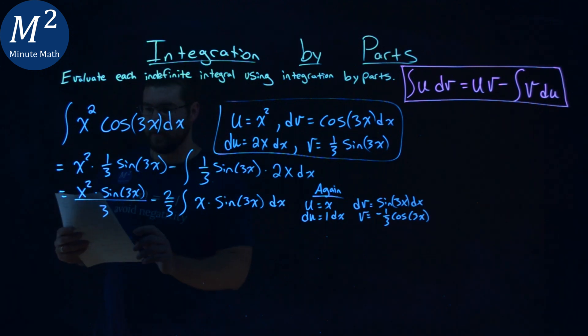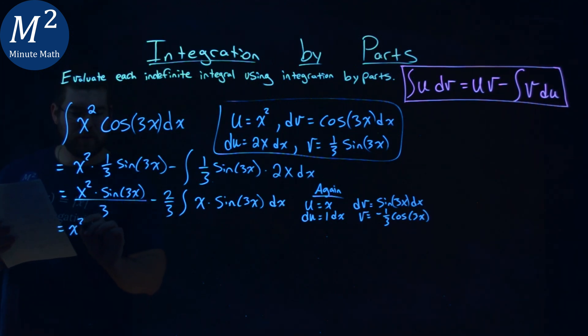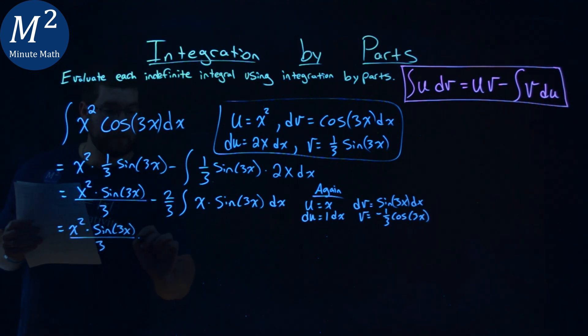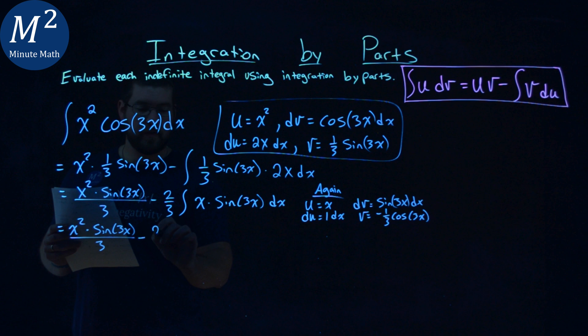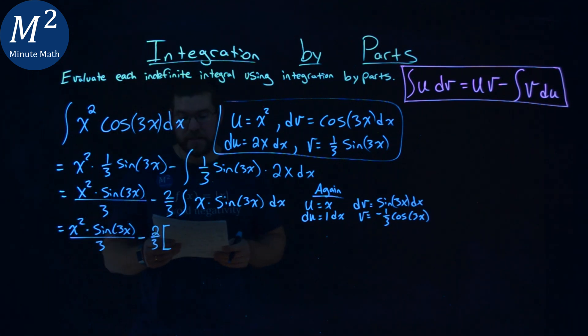Apply that again here. We keep everything over. x squared sine of 3x over 3 minus 2 thirds stays out here, but now we're going to apply our formula. I like to put a little bracket here to show that 2 thirds needs to apply to everything.